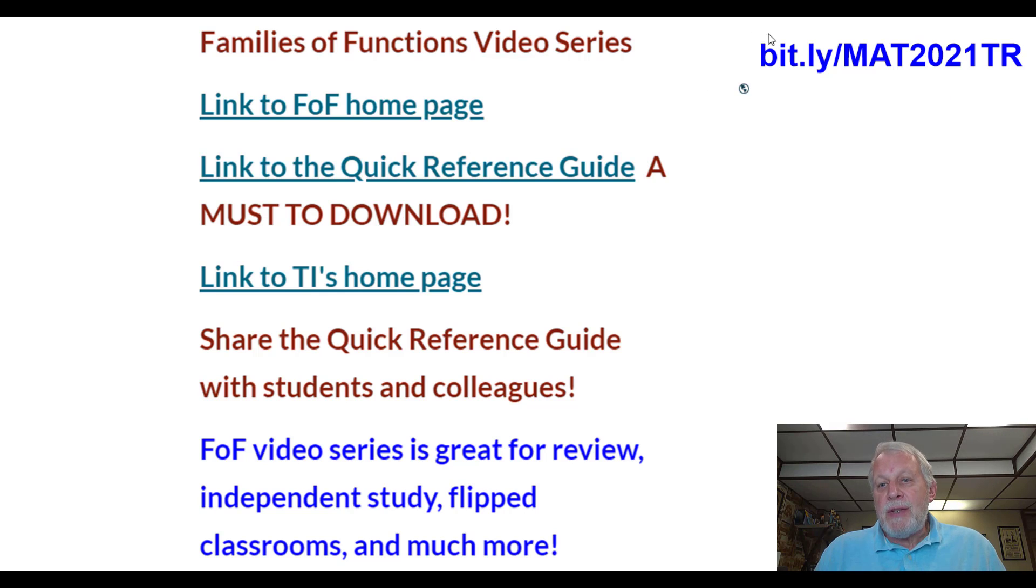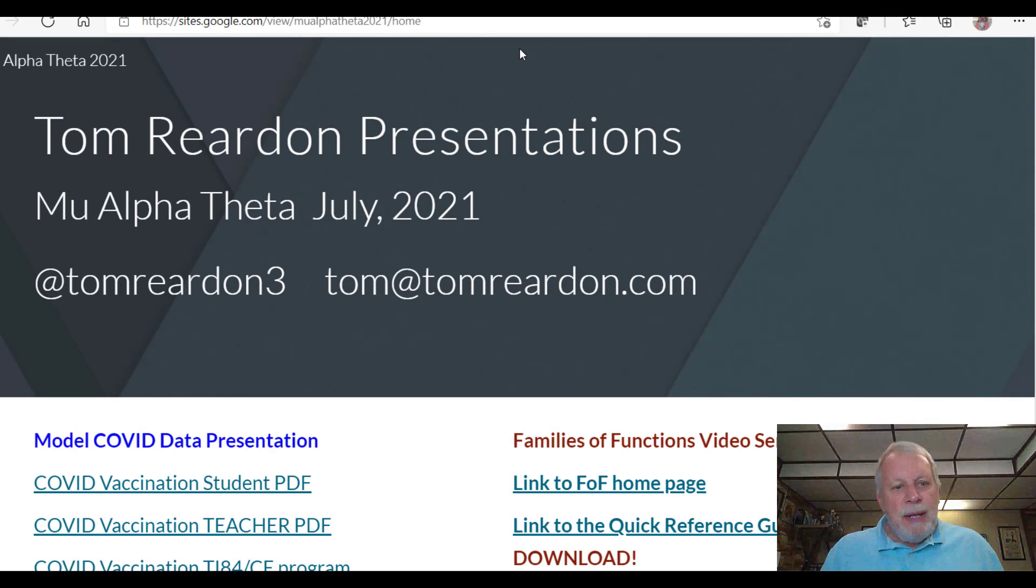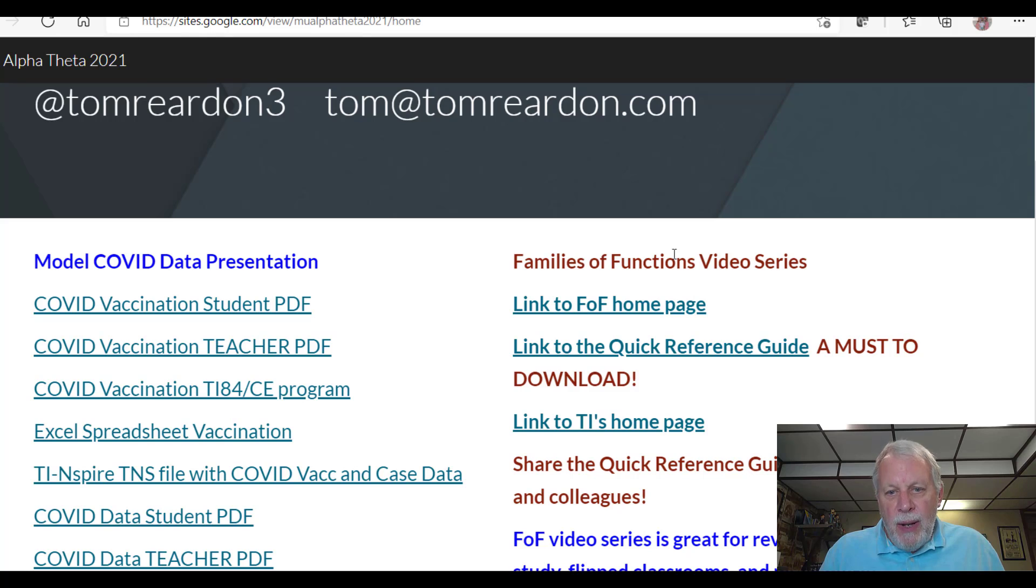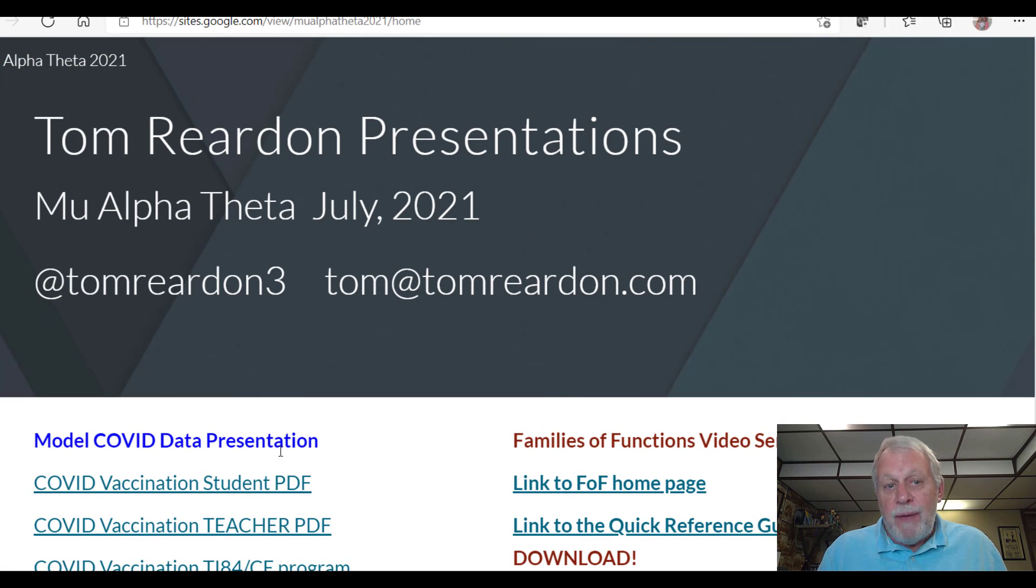All right, so again, here's the website that has all the information for both of my presentations. bit.ly forward slash capital M-A-T from Mu Alpha Theta 2021 and TR for Tom Reardon. Pause as needed. These are what's on the family of functions. There's a link to the home page, link to that quick reference guide. Again, a must to download for your students and colleagues. Link to TI's home page. In fact, let me just kind of go there so you can see that. So if you go to this website, you can see right here is this kind of the title part. But here's the heart of it right here. This is the family functions video series side. These are all links here. And then if you look at my COVID data presentation, this is all the data right here. So you're welcome to watch that video as well or take that information. All right, please contact me with questions. I hope you have a great conference and I hope this was worthwhile for you. Thank you.